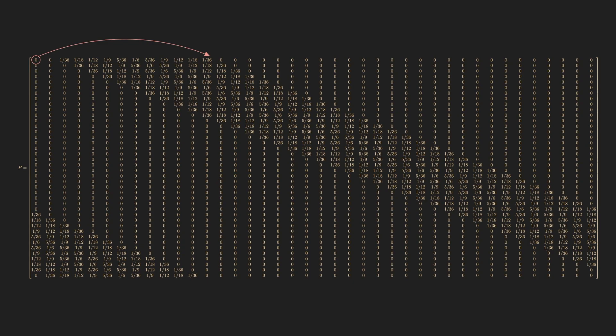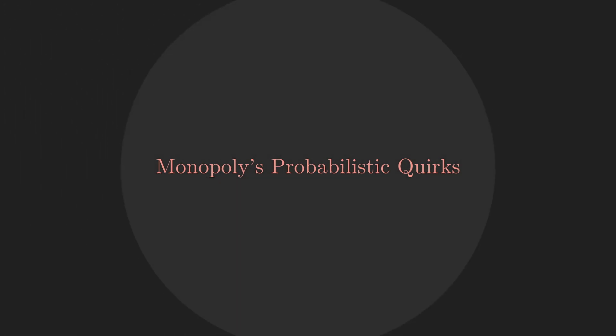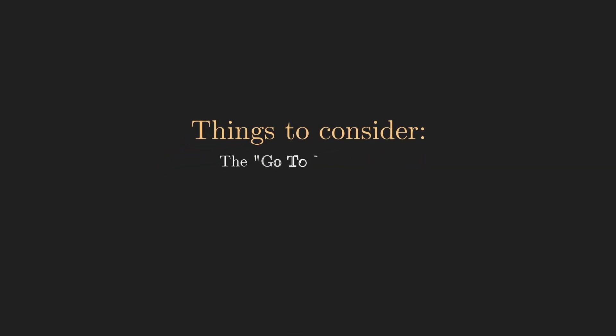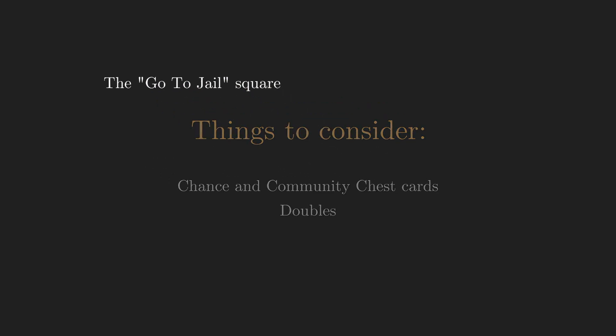This is a huge step towards completing our model. However, we need to take into account some quirks I hinted at earlier, which make Monopoly less easily predictable, as they can greatly modify the chances of ending up in some squares in the long term. Namely, three things concern us. Firstly, the Go to Jail square, which immediately sends us to jail every time we get to it. Secondly, we have the Chance and Community Chest cards, some of which send the player to different squares on the board. And last but not least, the doubles system, where if a player gets two equal faces in a dice roll three times in a row, they are sent to jail.